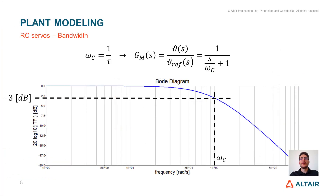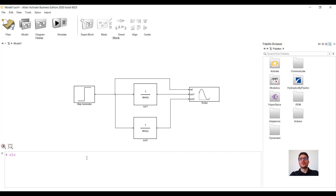As we mentioned before, the time constant also determines the bandwidth of the first-order system. In fact, the cutoff frequency of the system is defined as 1 over the time constant. At the cutoff frequency the system response gets attenuated by 3 dB. We can easily visualize it in Activate as well. This time we are going to do it from the command window, but you can replicate it using the initialization tab. We just define the transfer function and use the built-in Bode function.